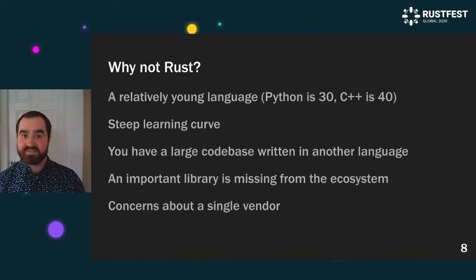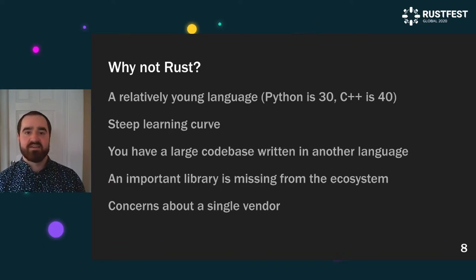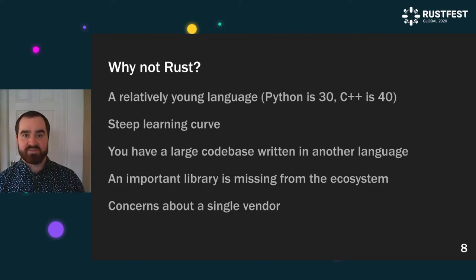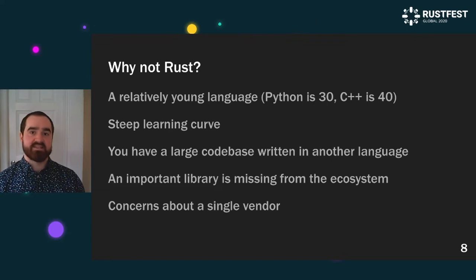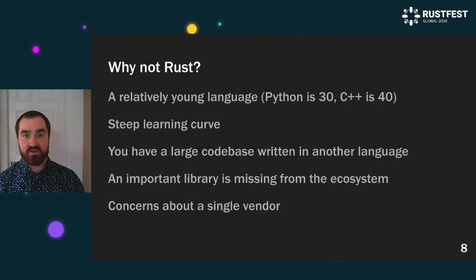Of course, right away there are maybe some reasons not to use Rust. Given the comparative age of all these languages, Rust is relatively young — it's only been five years since its 1.0 release — whereas Python is around 30 years old and C++ is around 40, and it's likely they're going to be around for a lot longer as well.